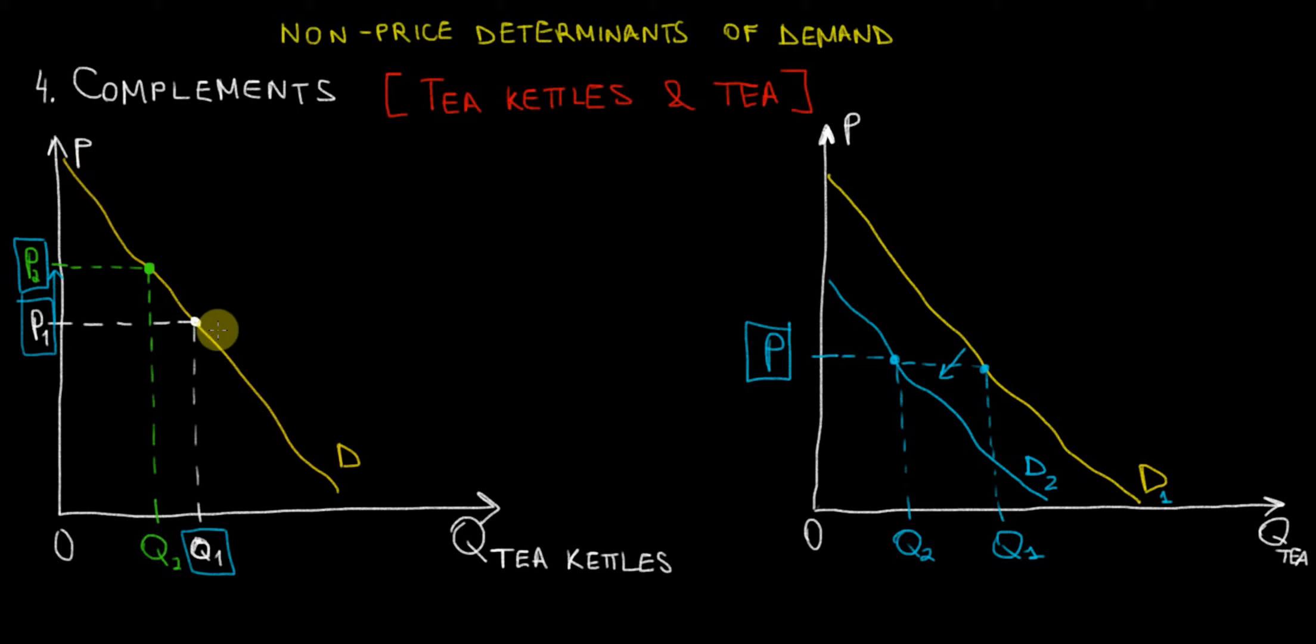we have a movement along the curve from one price level to another, whereas on the graph for the other complementary product, tea in this case, we have a shift of the demand curve because of the change in quantity demanded of tea kettles. Hope this all makes sense. I appreciate you watching. If you like the video, please subscribe.